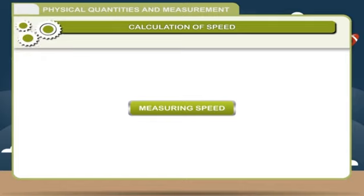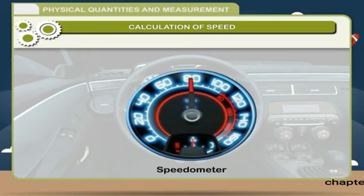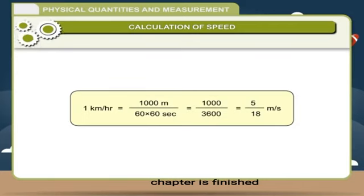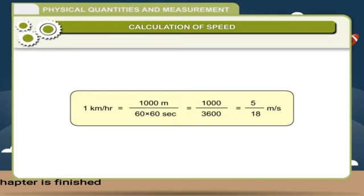Measuring Speed: If you are inside a vehicle such as a car, you can easily find out how fast you are travelling. A car has a speedometer on the dashboard to tell the driver its speed. The speedometer gives speed in kilometres per hour. Converting: 1 km/h = 1,000 m ÷ (60 × 60 s) = 1,000 / 3,600 = 5/18 metres per second.